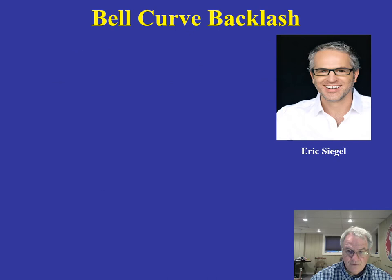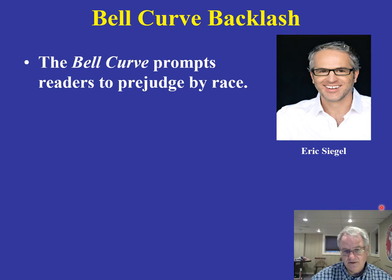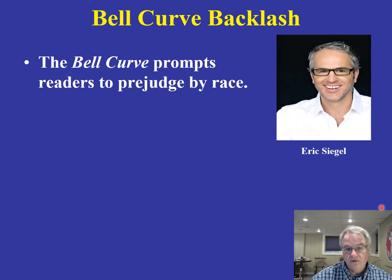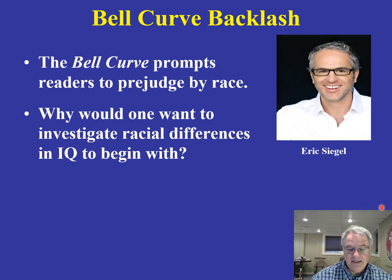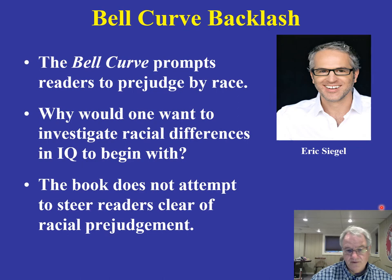Researcher Eric Siegel strongly believes that the entire premise of The Bell Curve and of studying racial differences in IQ is simply racist. He says the book prompts you to prejudge by race — the very premise of the work signals that race must be involved with intelligence. He asks why you would even investigate racial differences in IQ given what we know from the Human Genome Project about how genetically similar African Americans and Caucasians actually are.